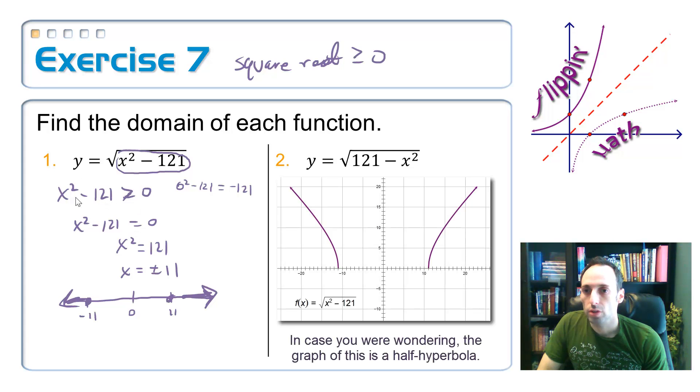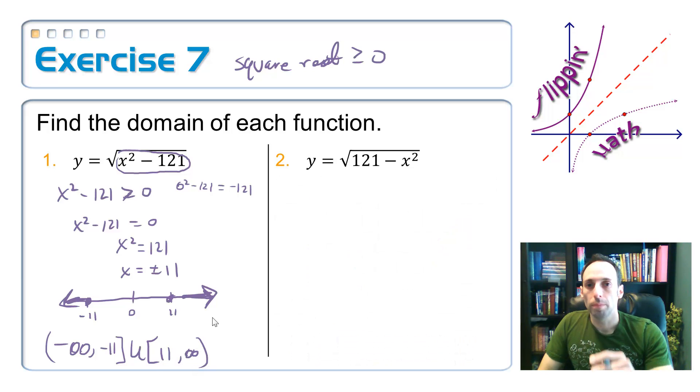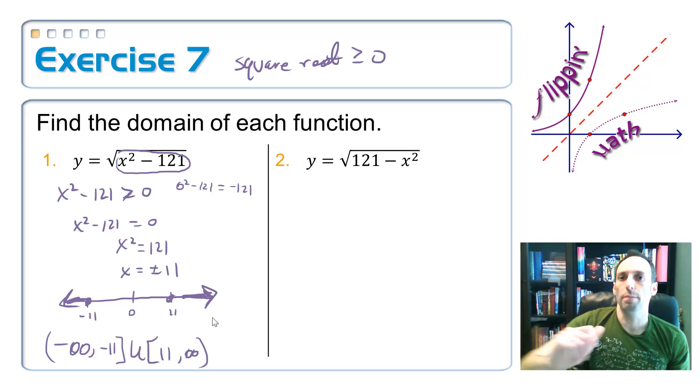We had x squared minus 121 is greater, and it's a greater. So my domain on this is from negative infinity to negative 11, it gets a bracket, union, another bracket, positive 11 up to infinity. Okay, so why don't you go ahead. There is one right beside it. Number two, give that one a try on your own after you have paused this.